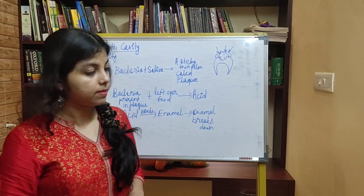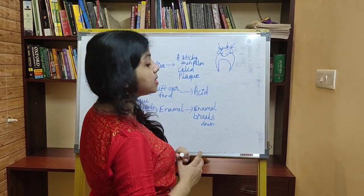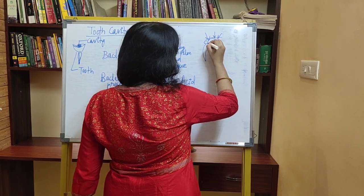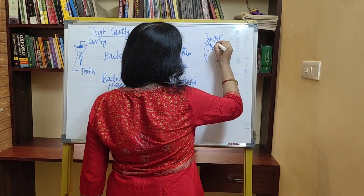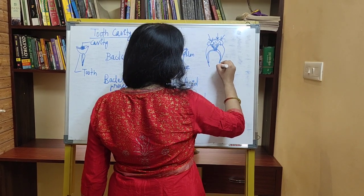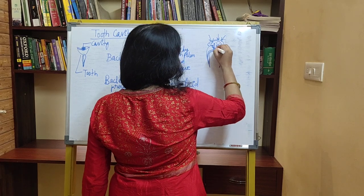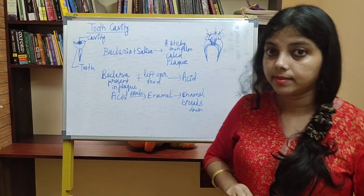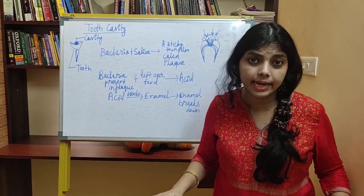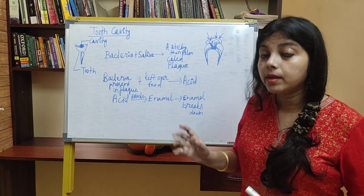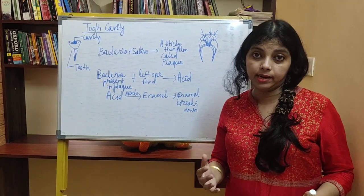When the enamel breaks down, the case gets severe. After the enamel, there is the dentine. When there is decay, the plaque causes decay in the dentine also. This cavity increases. Here is the pulp. It touches the pulp. And when the cavity reaches the pulp, what will happen? The tooth starts to ache badly, because the pulp contains the nerves and blood vessels. When the cavity reaches the pulp, the tooth starts aching very badly.